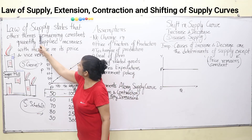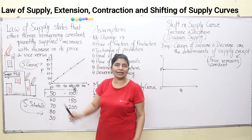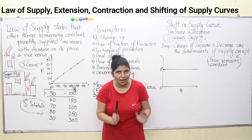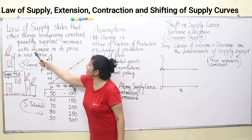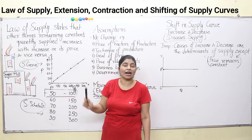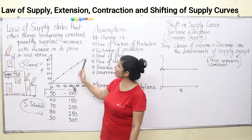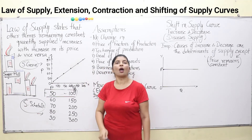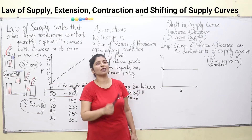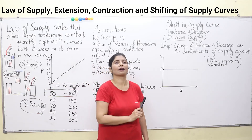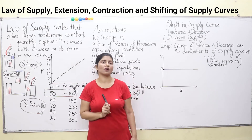Quantity supplied — other things remaining constant — increases with increase in its price. That means there is a direct relation between price and the quantity supplied in the market. Higher the price in the market, higher will be the quantity supplied by the producer. So higher price means higher supply and lower price means lower supply.